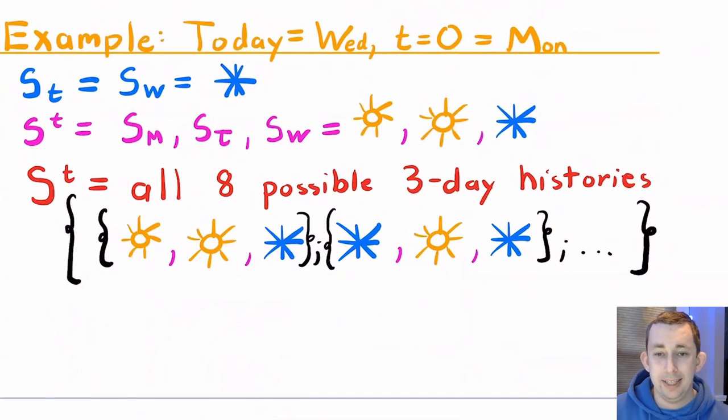To give a quick example, let's say that today is Wednesday and T equals zero, we'll say it was Monday. Let's also say that today it's snowy. So we would say that S subscript T or the weather today, S subscript Wednesday is snow or this blue star. The event history S superscript T would then be the weather on Monday, Tuesday, and today on Wednesday. So maybe it's been sunny, sunny, and today it's snowy. So that would be our event history. Now big S superscript T or the event history set would be the eight possible options that we could have experienced in terms of weather between Monday and Wednesday.